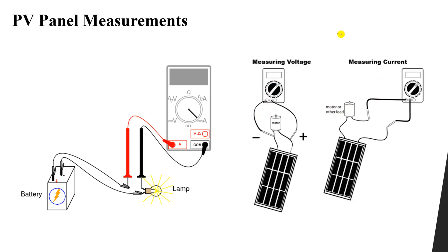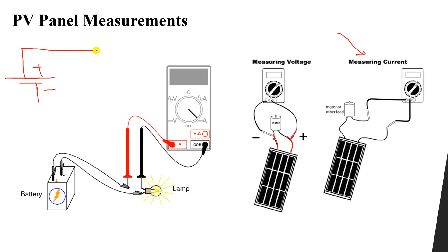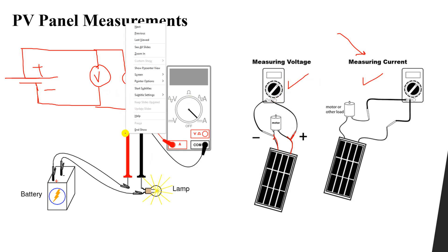For measuring voltage, the avometer is connected in parallel with the load. You have the PV panel with positive and negative terminals, and you connect the avometer in parallel — positive to positive, negative to negative — across the load (such as a motor). This way you can measure the voltage across the load.